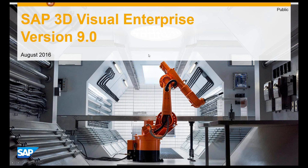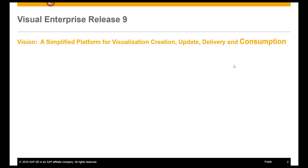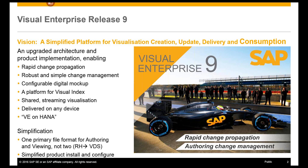What we've done over the past year in version 9 is try to simplify our platform for the creation and delivery of visualization files throughout the SAP ecosystem. We've made changes to our architecture and the file format itself, focusing on the VDS file format — expanding its use as both an authoring format and a delivery format, not just delivery. We've also made simplifications to the way products are installed and licensed.